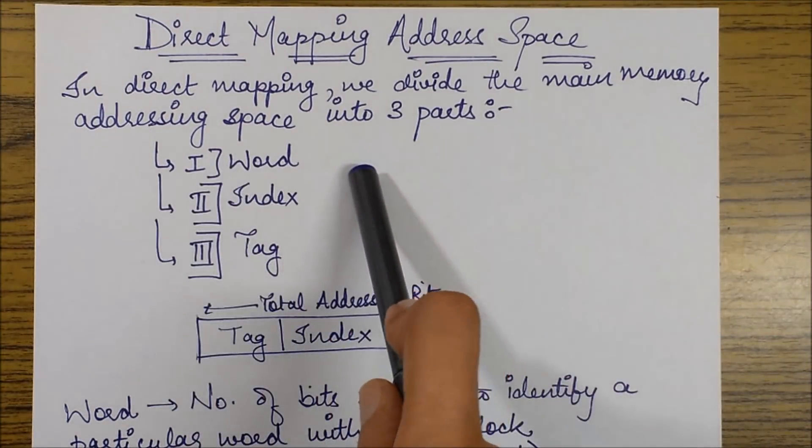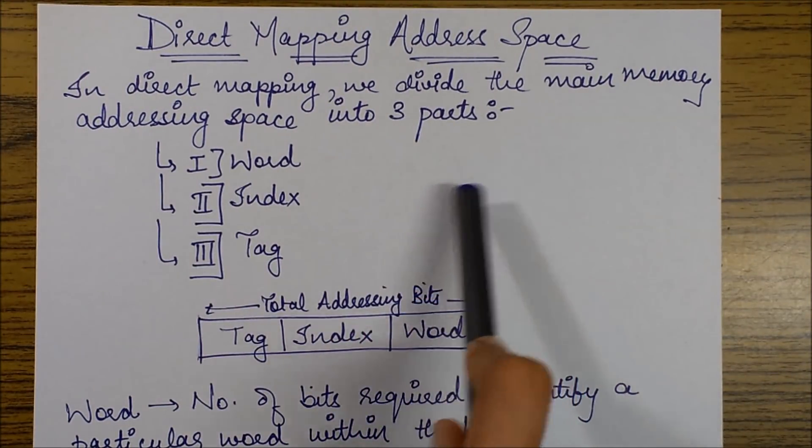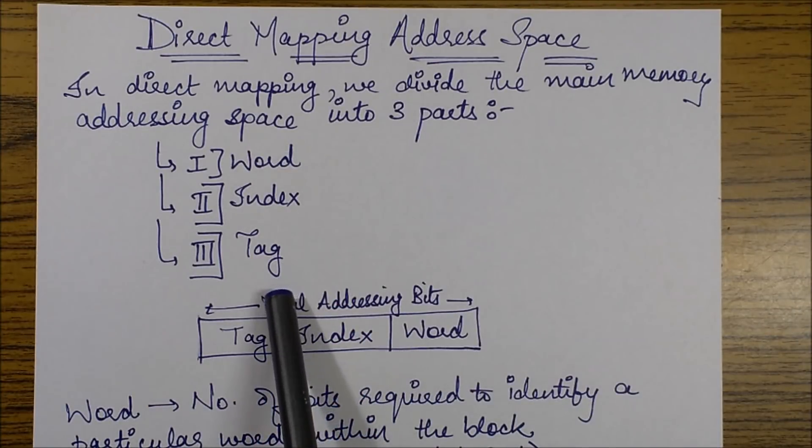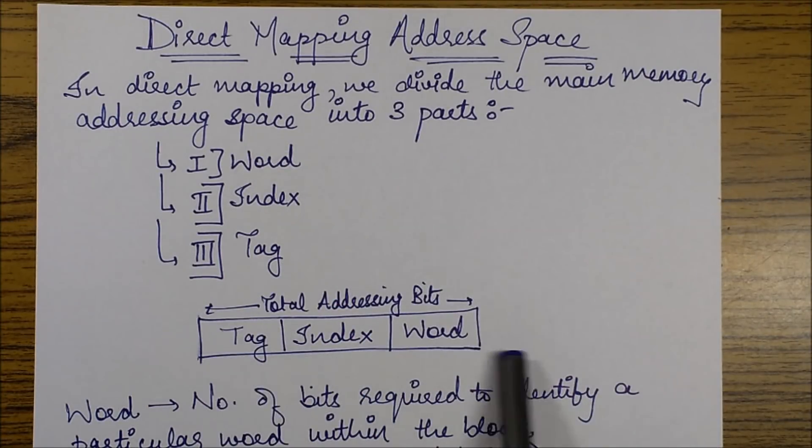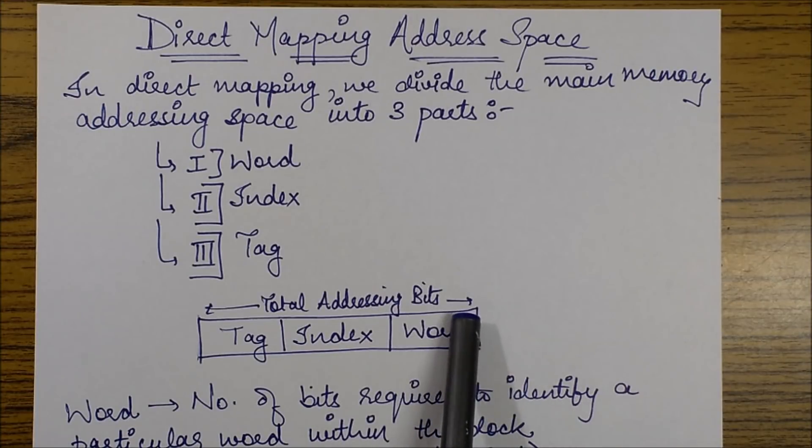In direct mapping scheme, we basically divide the main memory address space into three parts: word, index, and tag. They are listed like this: tag, index, and word. If this is a total address, the first part will represent its tag bits, next will represent its index bits, and the next will represent its word bits.